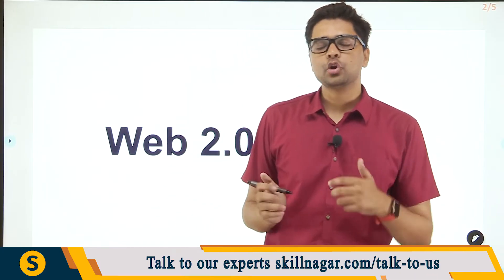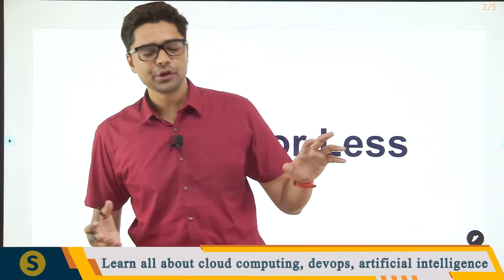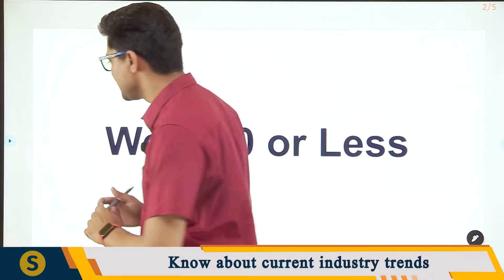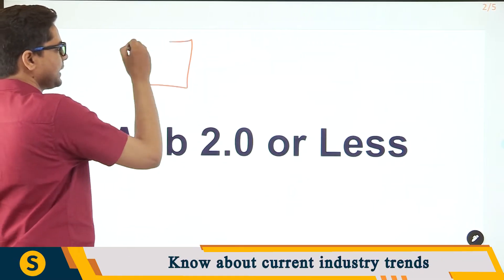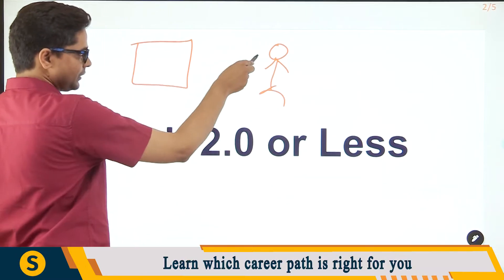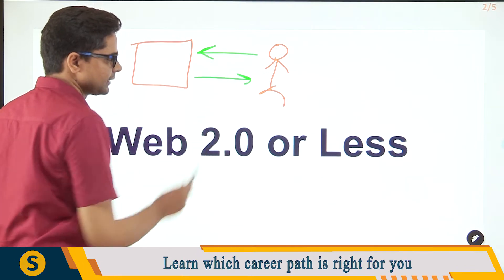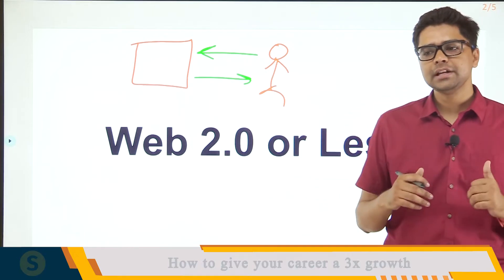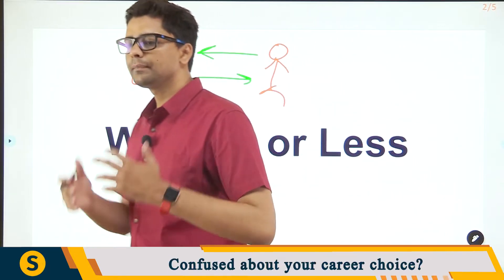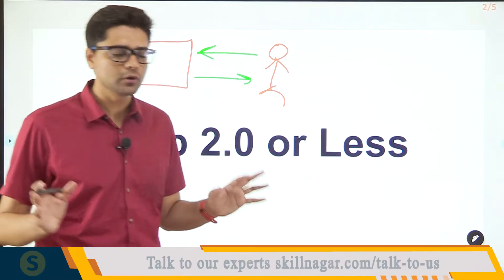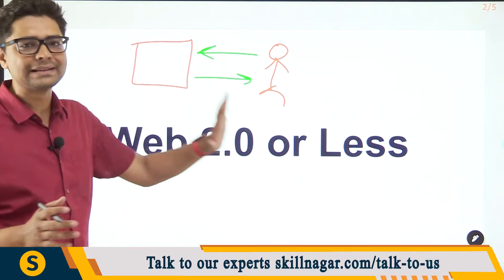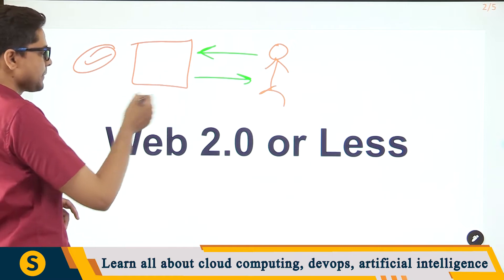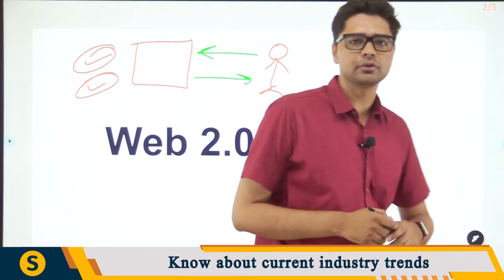For everyone who is not aware of these terms, let's first understand Web 2.0. Web 2.0 is very simple — we have a platform and we have a user. A user can be a content consumer or a content creator, so it moves in two directions. For example, you can watch videos on YouTube and also share videos on YouTube. The downside is you are dependent on the platform; they can ban you or remove your account.